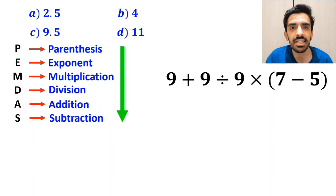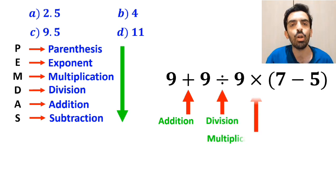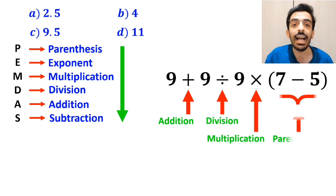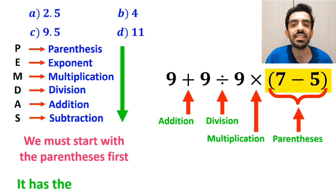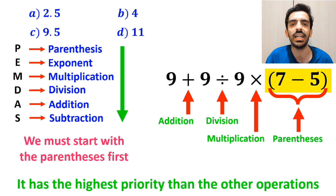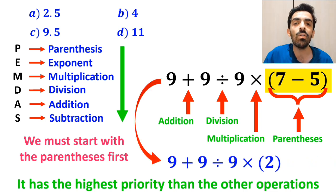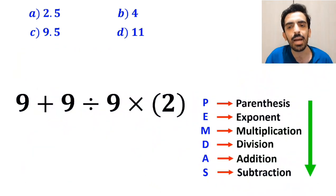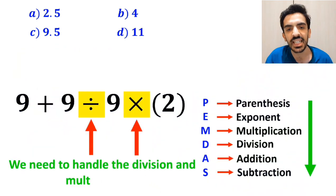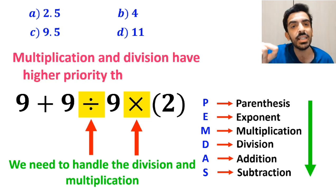As you can see on the screen, in this expression, first we have an addition sign, then a division sign, followed by a multiplication, and finally parenthesis. We must start with the parenthesis first, because it has the highest priority over the other operations. So instead of this expression, we can write 9 plus 9 divided by 9 times 2. In the next step, we need to handle the division and multiplication, because multiplication and division have a higher priority than addition.